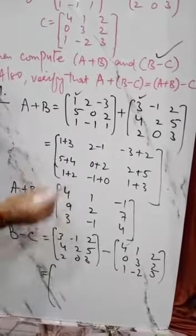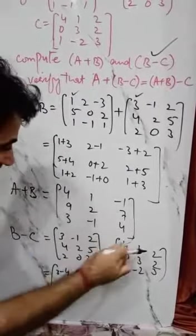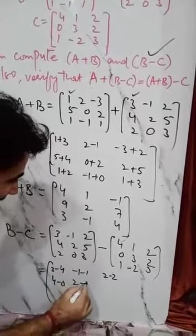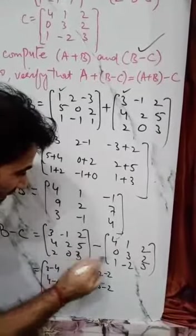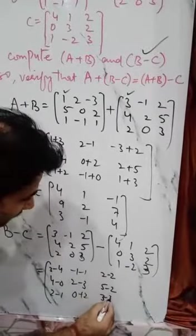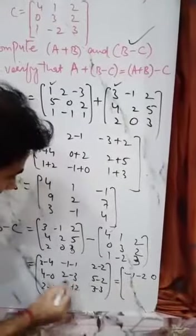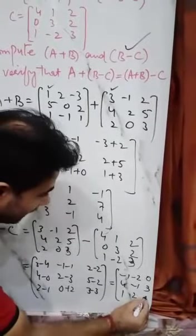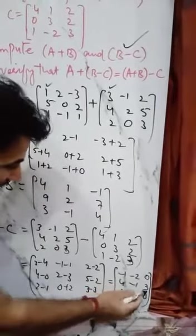Again in the similar manner as done above: 3 minus 4, then minus 1 minus 1, then 2 minus 2; second row 4 minus 0, 2 minus 3, 5 minus 2; third row 2 minus 1, 0 minus minus 2 which is plus 2, and 3 minus 3. So B minus C equals: minus 1, minus 2, 0 in the first row; 4, minus 1, 3 in the second row; 1, 2, 0 in the third row.